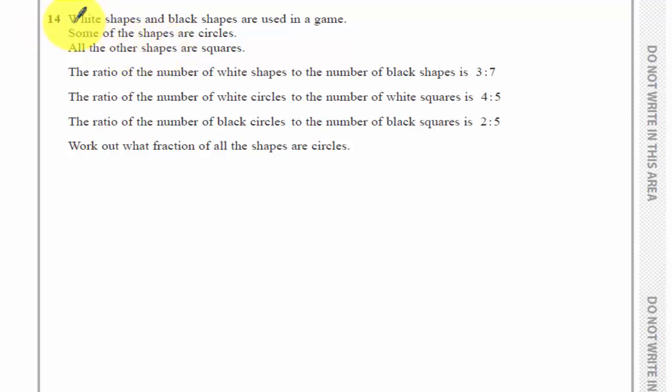Question 14. So we have white shapes and black shapes in the game, and they are circles and squares. We're told that the ratio of white shapes to black shapes is three to seven.